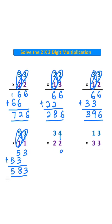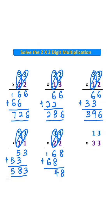4 times 2 is 8. 3 times 2 is 6. 8 plus 0 is 8. 6 plus 8 is 14. 1 plus 6 is 7. Answer is 748.